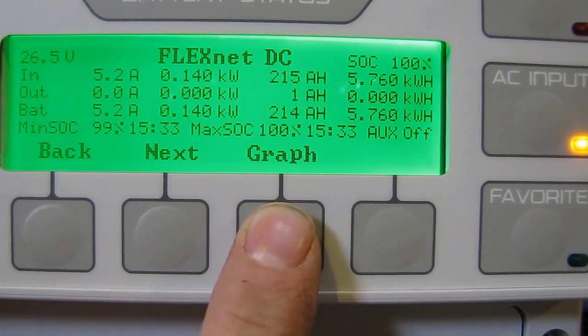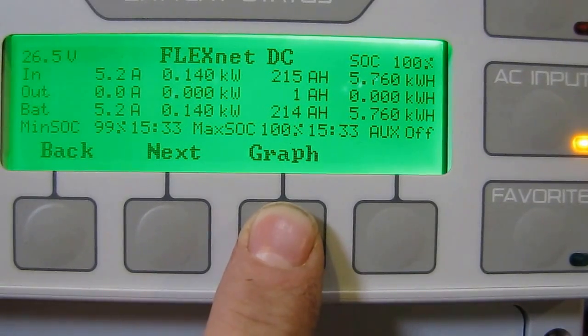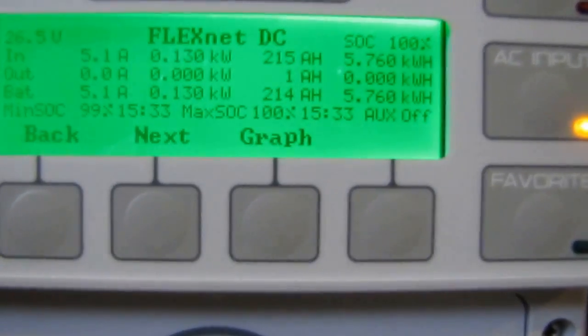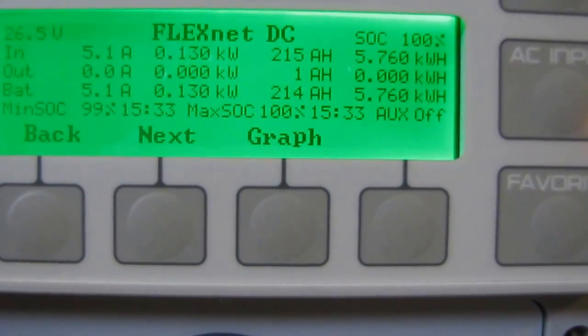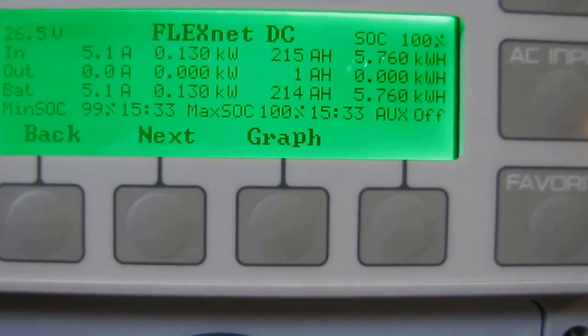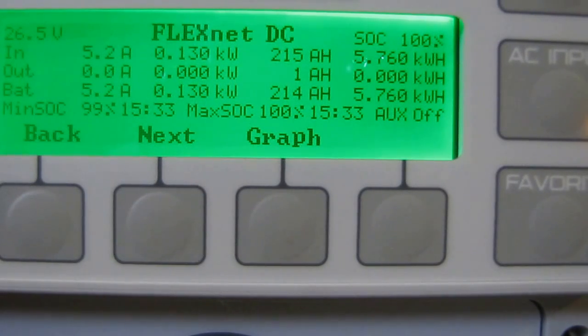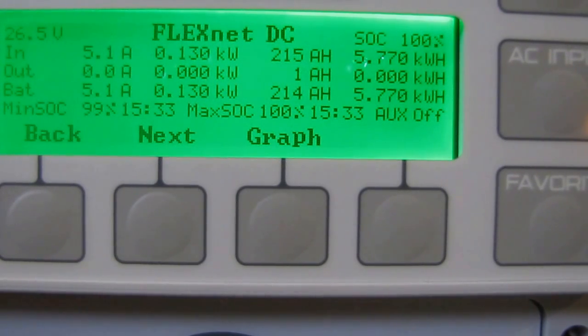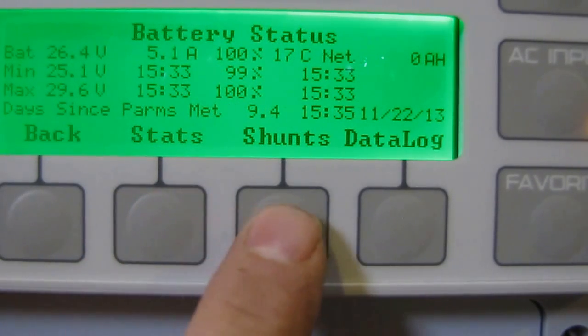Alright, looking at the graph. Today is a fairly windy day. Let me try to zoom in a bit so you can see. We're at a state of charge of 100%, and today we've put in 205,760 watts, or 5.76 kilowatt hours. Today we brought in 218.15 amp hours.